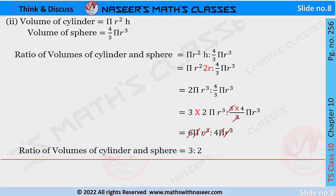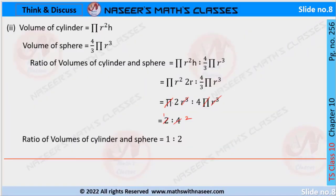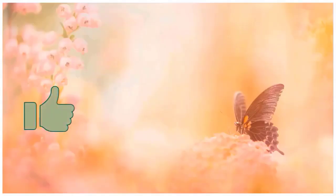After cancelling, 6 and 4 simplify — dividing both by 2, we get 3 : 2. Therefore, the ratio of the volumes of the cylinder and sphere is equal to 3 : 2.